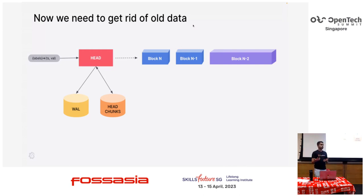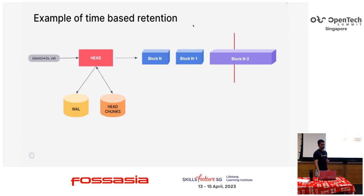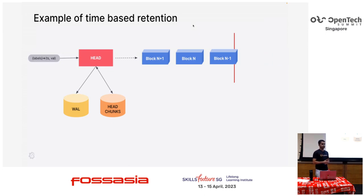At some point you want to get rid of old data — you don't want to store all data in your system because sometimes you don't need old time series data. You can configure TSDB to have retention based on disk space usage and also how much time range your data is covering. This is an example of time-based retention: every data which is beyond the red line has to be deleted. But if a block overlaps, since blocks are immutable, we have to delete a whole block together. Once we add more data and create more blocks and a block goes outside the retention range, it is simply deleted — as soon as new blocks come up, the old blocks that go outside the retention range are just removed from the system.